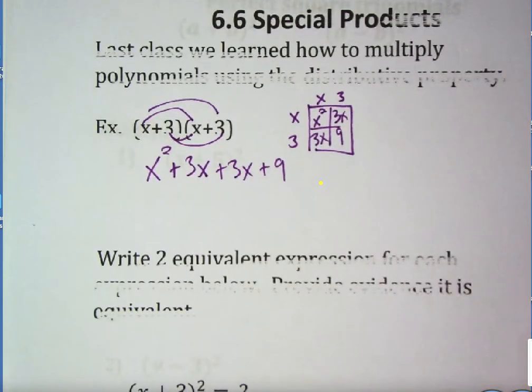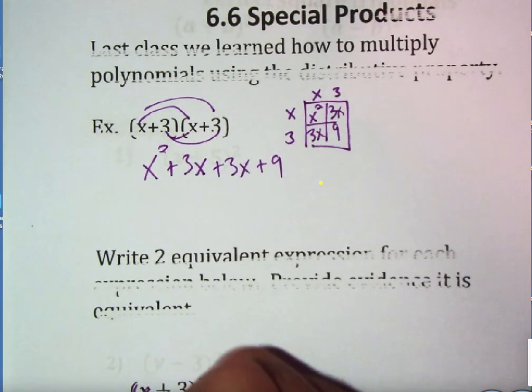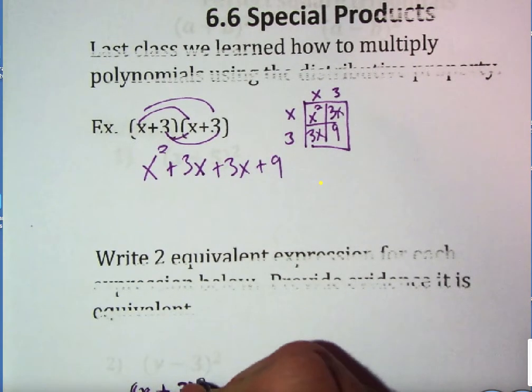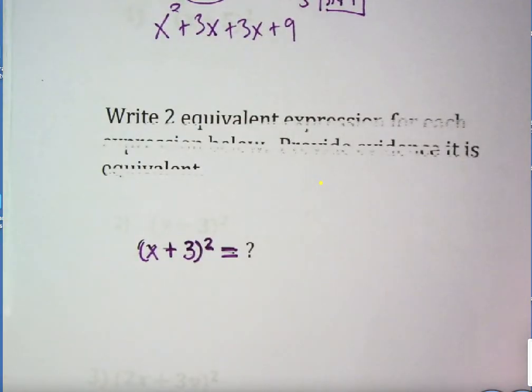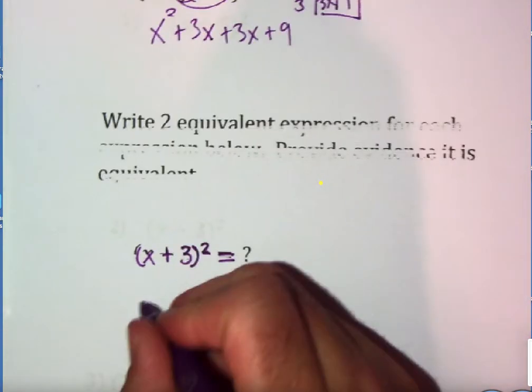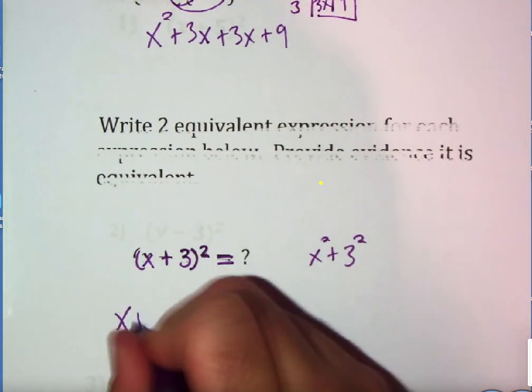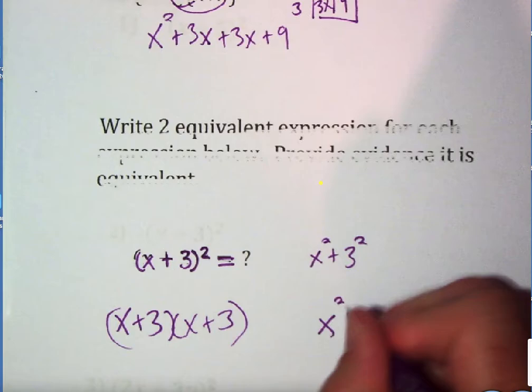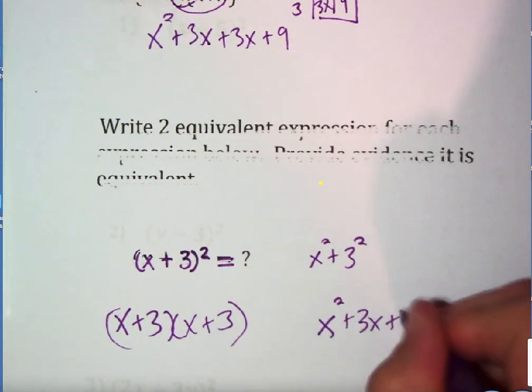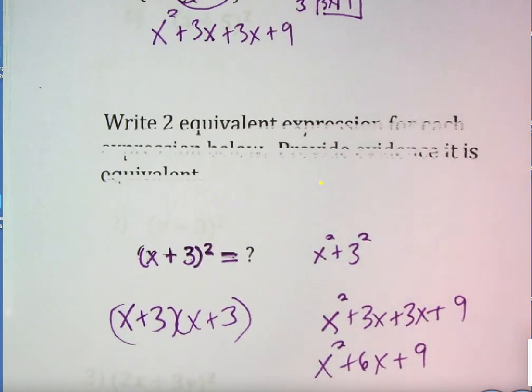Directions now ask you to write two equivalent expressions for each expression below and provide evidence. This one says x plus 3 squared. So with your partner, what do you think an equivalent expression to x plus 3 squared is? And you would talk. Some students would say x squared plus 3 squared. Some students would say that's x plus 3 times x plus 3. Another student might say that's x squared plus 3x plus 3x plus 9. Another student might say that's x squared plus 6x plus 9.